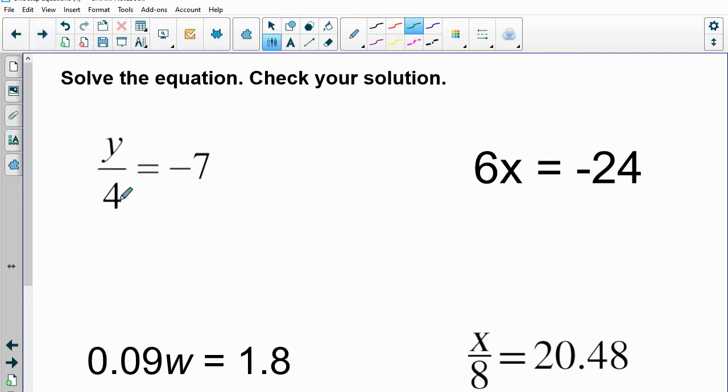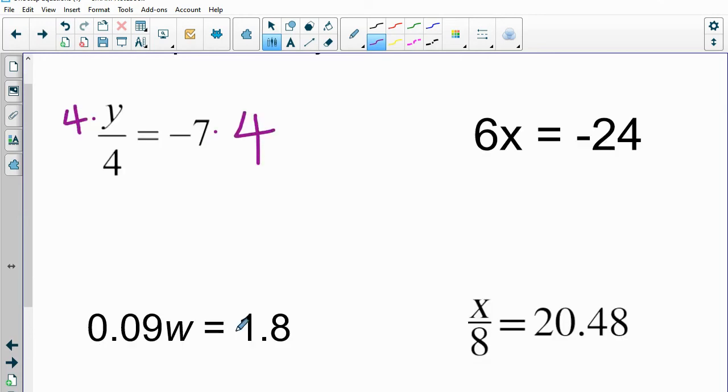All right, keep moving. There's four more problems to do real quick. Let's just quickly set up what you would do to begin. I think we'd multiply both sides by 4. And in this particular problem, we divide both sides by 0.09. Okay, on this next problem, we divide both sides by 6.